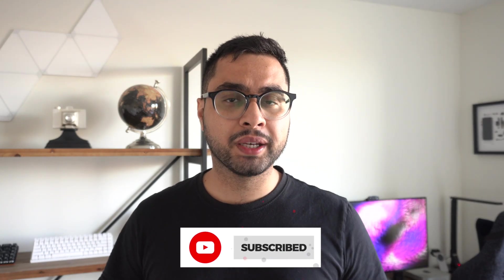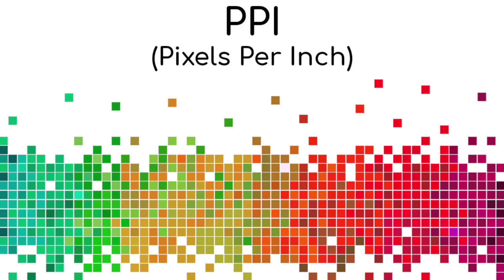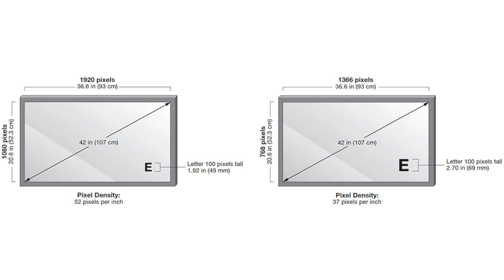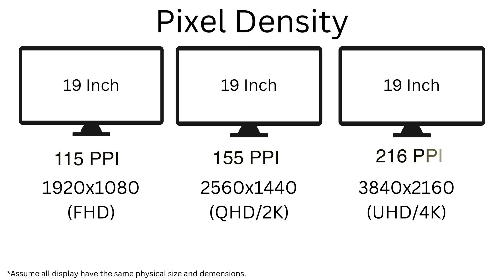Hopefully, things are starting to sound a little bit more simple now. But hold your horses, there is a second dimension of choosing the right resolution, and that is pixel density. This is usually measured in PPI, or pixels per inch. Simply put, this is determined by your resolution and the physical size of the screen you're getting. The larger a display you get, the lower your PPI gets. Let's assume for a minute that you have three 19-inch screens, each with a different resolution: one with 1080p, one with 1440p, and one with 4K. The screen with a 1080p resolution will have a 115 PPI rating, the 1440p will have a 155 PPI rating, and the 4K resolution will have a 216 PPI.